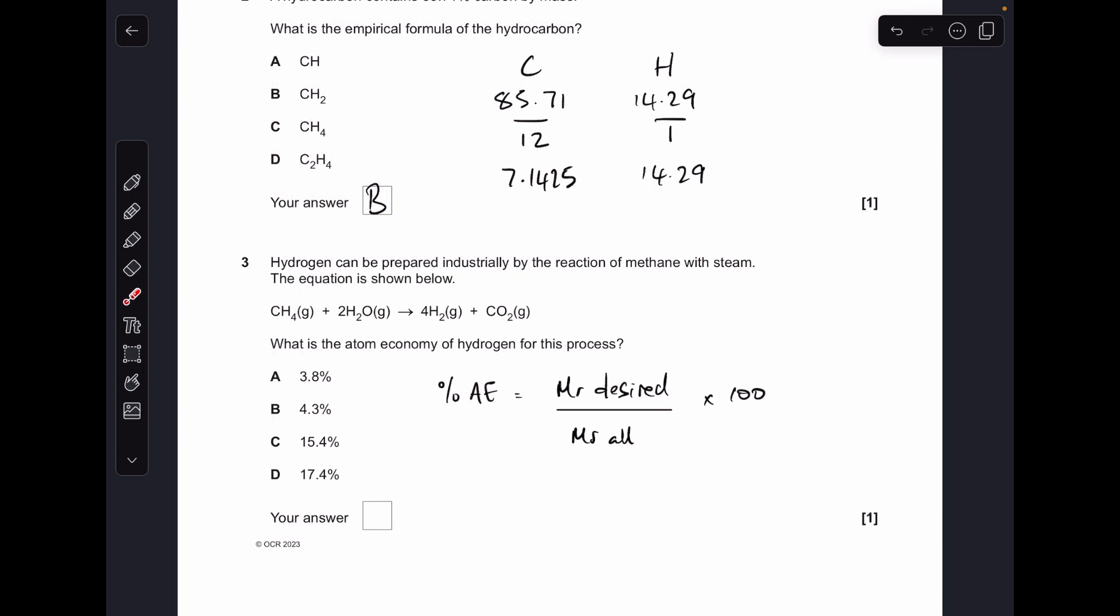Number three, percentage atom economy. There's the formula there, so it's the MR of the desired product, hydrogen in this case, divided by the MR of all of the products or all of the reactants, doesn't matter which way you do that, multiplied by 100 to get it as a percentage.